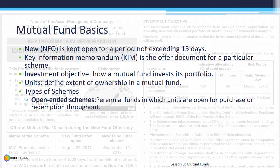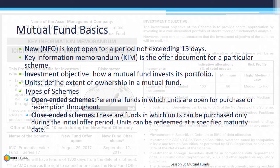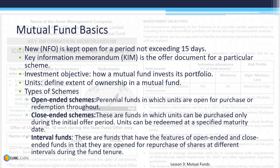There are three types of mutual fund schemes. Open-ended schemes are perpetually available for purchase and redemption. Close-ended schemes can be purchased during the NFO and are redeemable at a specified maturity date. Interval funds are types of close-ended funds that become open for purchase and redemption at specific periods. Both close-ended and interval funds are mandatorily listed on stock exchanges.